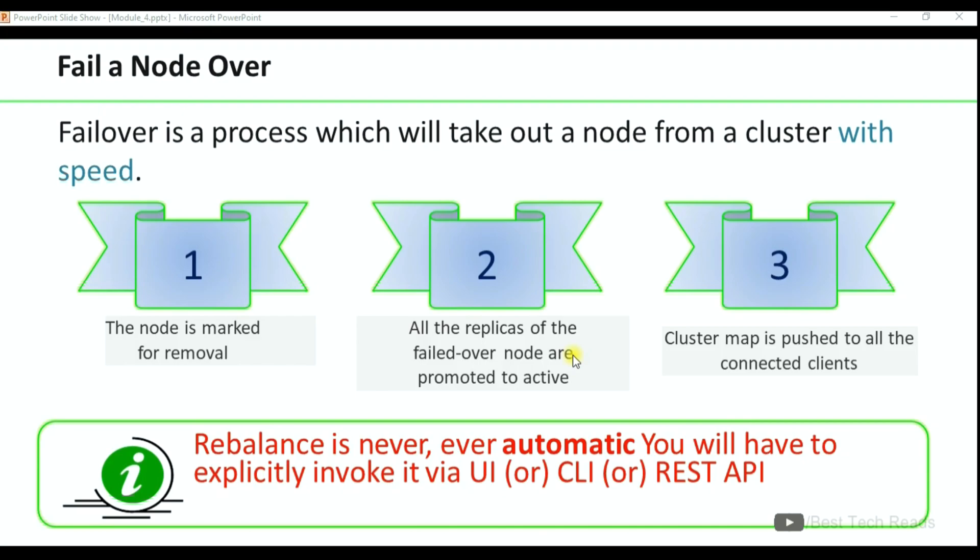Hi, welcome back. In this video we are going to see about Couchbase failover. Failover is a process which will take out a node from a cluster with speed. Basically, failover is two types: graceful failover and hard failover.